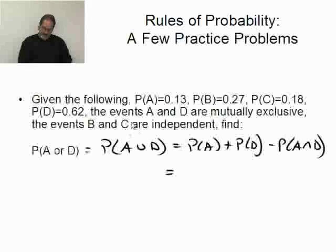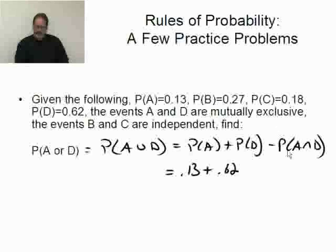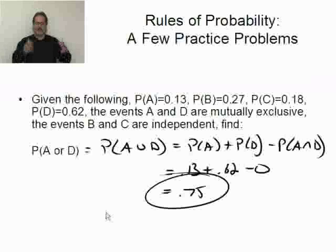Well, probability of A is 0.13. Probability of D is 0.62. Probability of A and D. What is that? Well, A and D are mutually exclusive, so A and D must be 0. So, this is what? 0.75? So, the probability of A or D, because they're mutually exclusive, is just the sum of the individual probabilities, which is 0.75. And that's going to wrap it up for a couple of quick practice-type problems.